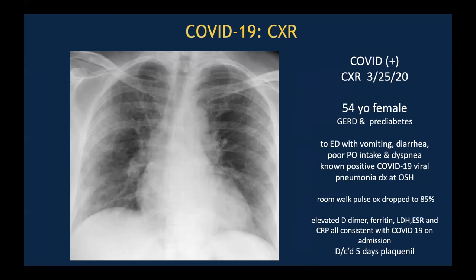Here is another chest X-ray example that mimics interstitial edema. We look at the periphery of the lungs and can see what look like Kerley lines, some patchy ground glass or alveolar type opacities — not very severe in overall extent. This patient presented predominantly with GI symptoms and poor oral intake, with dyspnea as a secondary symptom. This patient was known COVID-19 viral pneumonia positive at an ambulatory care facility before coming to our emergency department. They desaturated to 85% with pulse ox on room air and were treated with plaquenil for five days prior to discharge.